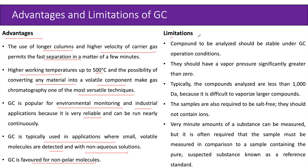Limitations include that compounds to be analyzed must be stable under GC operating conditions. They should have a vapor pressure significantly greater than zero. Typically, compounds analyzed are less than 1000 daltons because larger compounds are difficult to vaporize. Samples must be salt-free and should not contain ions. Very minute amounts can be measured, but often the sample must be compared to a reference standard containing the pure suspected substance.